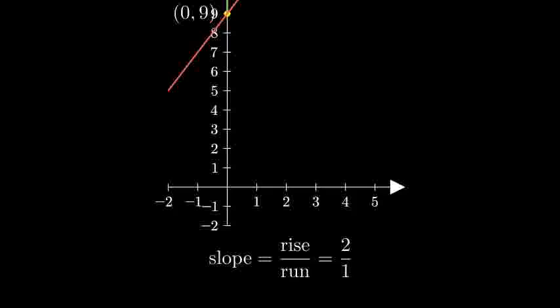Let's verify our line is correct by checking a few more points. If we continue using our slope, going up 2 and right 1 each time, we get the points (2, 13), (3, 15), and so on. All these points lie on our line.